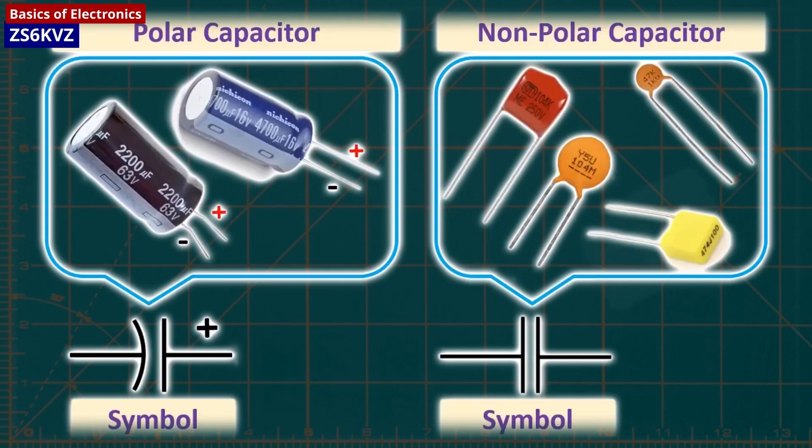Electrolytic capacitors are polarized, meaning one pin must be connected to the ground side of the circuit, while the other pin must be connected to power. The capacitor's value is written on it, typically in uF.